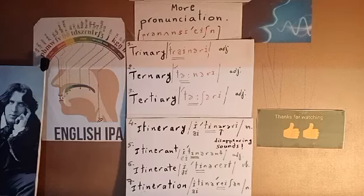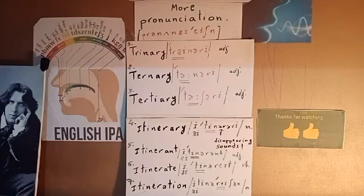The third word is the verb itinerate. Itinerate means to go or to travel from place to place. It's also a four-syllable verb, and the second syllable 'T' should be stressed. Itinerate.